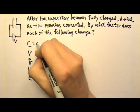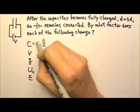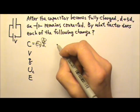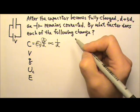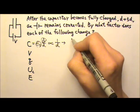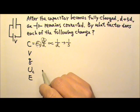C equals epsilon naught A over D for a parallel plate capacitor. The epsilon naught is always a constant, and in this case the plate area doesn't change either, so the capacitance is proportional to 1 over D. And the plate separation triples, D triples, so the capacitance becomes one-third of its old value.